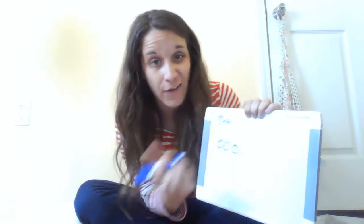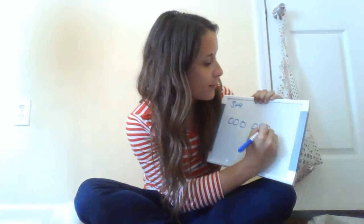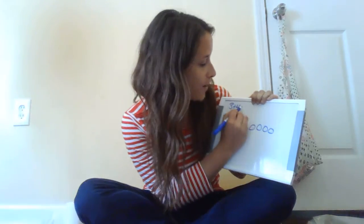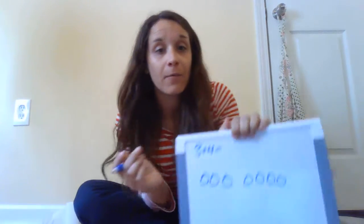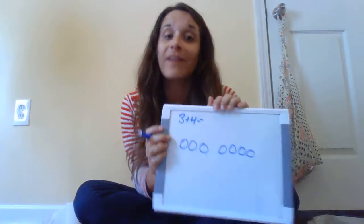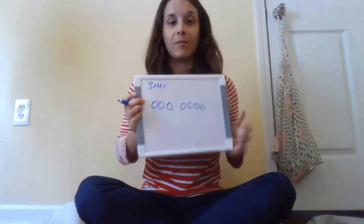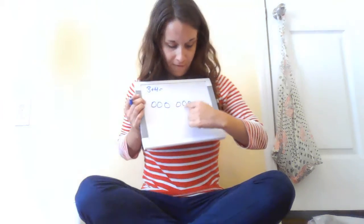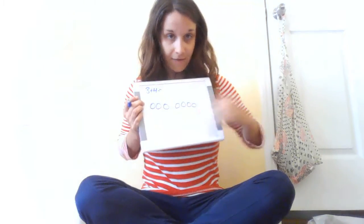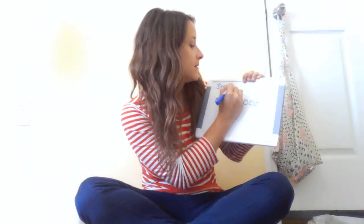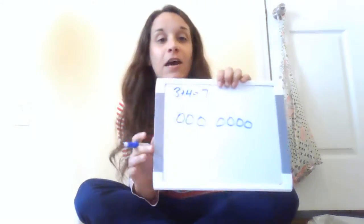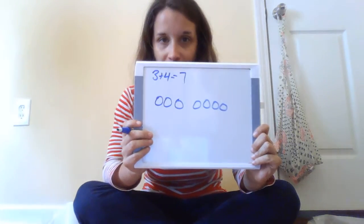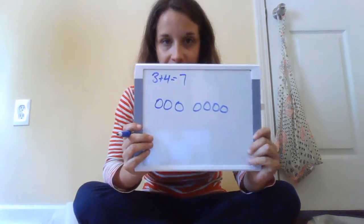I need to add 4 more circles: 1, 2, 3, 4. And we know that in order to find the answer, we count them all together: 1, 2, 3, 4, 5, 6, 7. So that is how you would use drawing as one of your strategies.